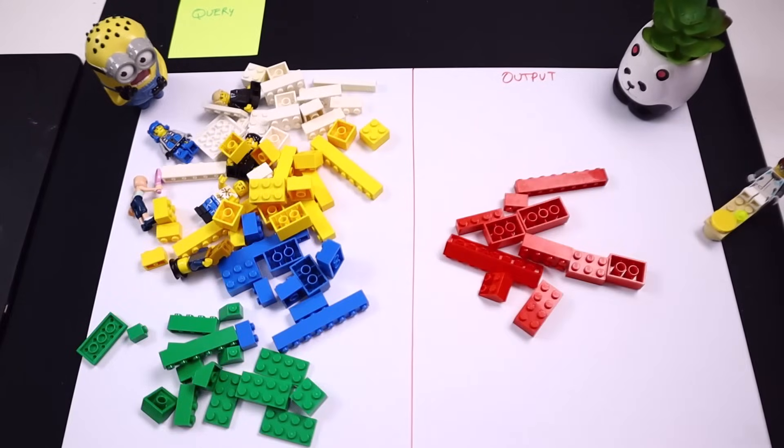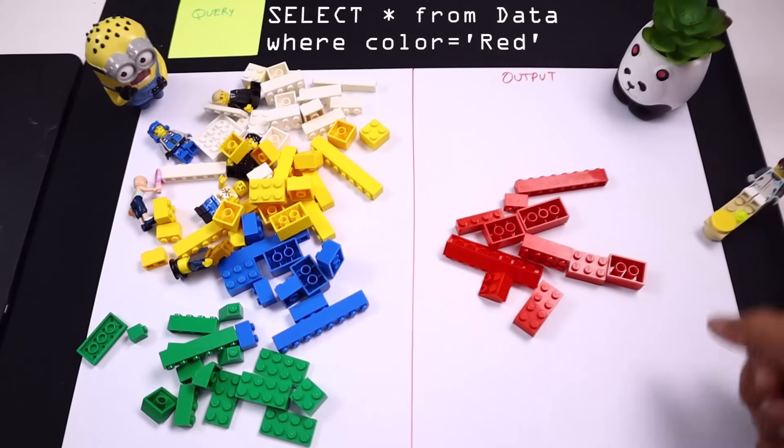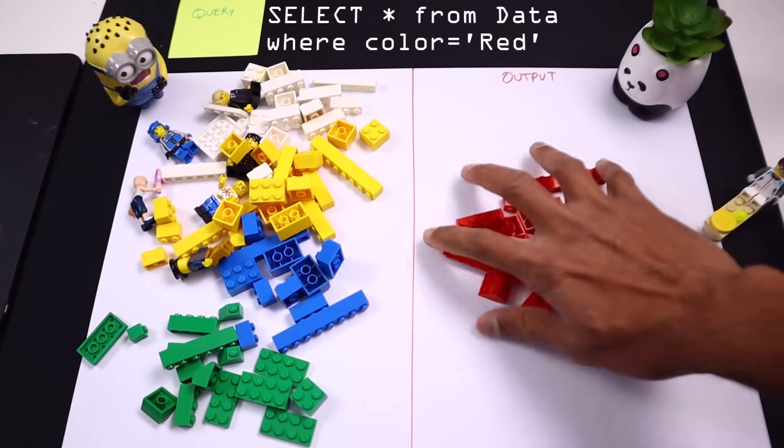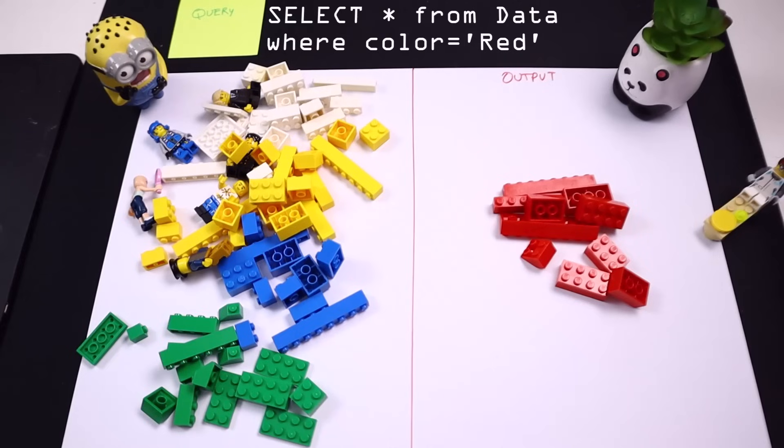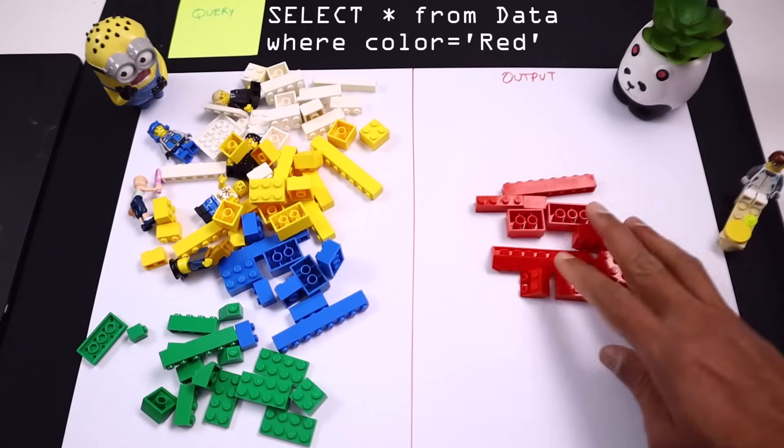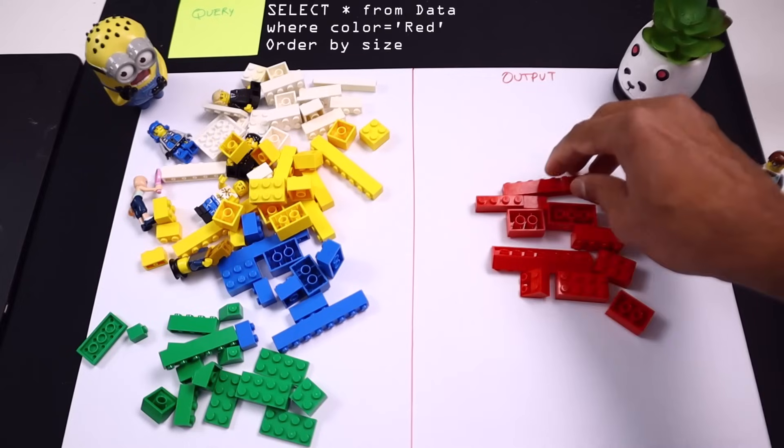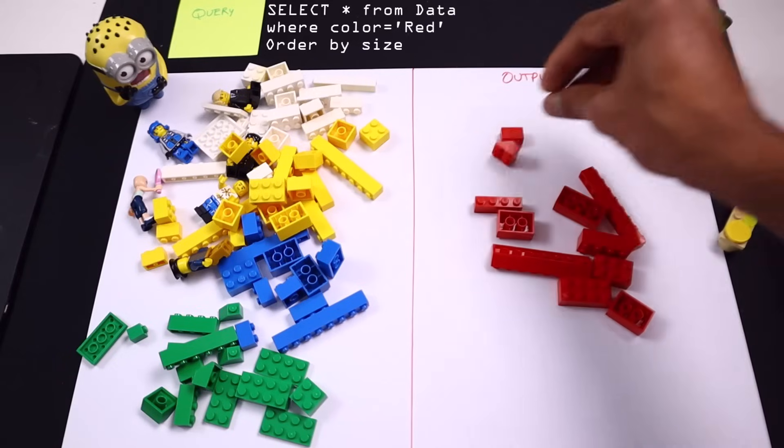Here is a query that shows me all the red bricks. So we could think of this as a select star from data where color is equal to red. Now this data is just haphazardly structured. If I want to arrange these bricks by size, we could use the order by clause. So we can say select star from data where color is red order by size.